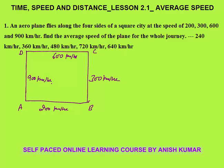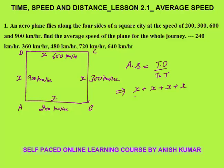We need to find the average speed for the whole journey. Since it's a square, assume each side has distance x. Average speed equals total distance divided by total time. Total distance is x + x + x + x = 4x.